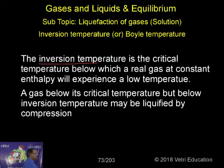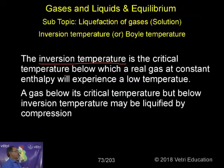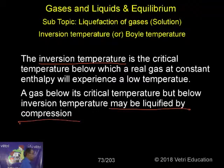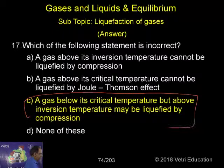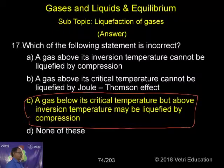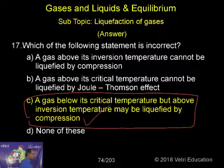What is inversion temperature? The inversion temperature is the temperature below which a real gas at constant enthalpy will experience a lowering of temperature. A gas below its critical temperature but below its inversion temperature may be liquefied by compression. So the correct answer is C, because option C incorrectly states 'above its inversion temperature' — it should be 'below its inversion temperature' for liquefaction by compression to be possible.